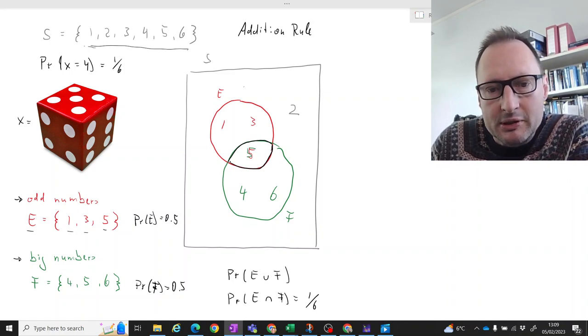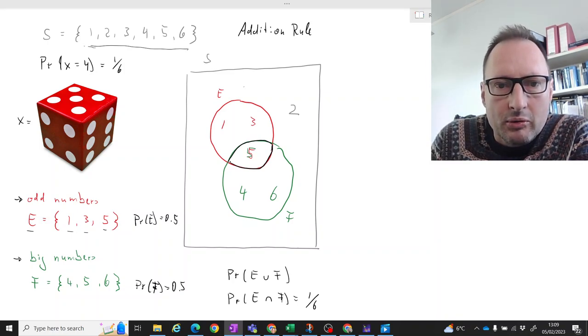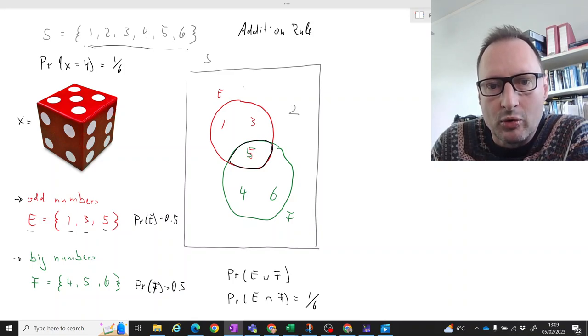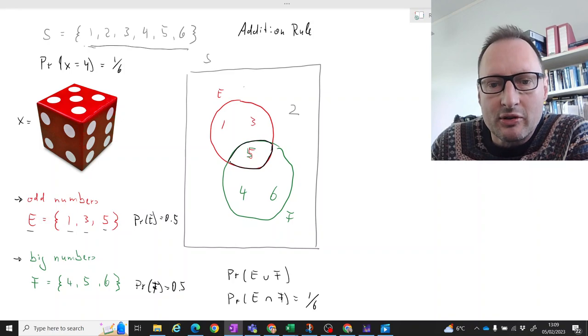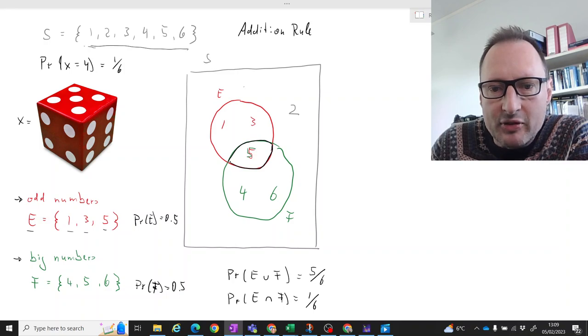So what about the probability of E or F? Well, what we see here is that is either getting a 1, 3, 5, 4, or 6. That's 5 out of our 6 numbers. So if we just look at this, we already know the answer to this should be 5 over 6.